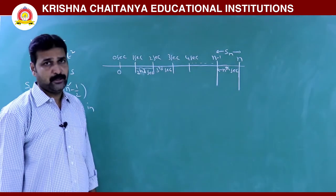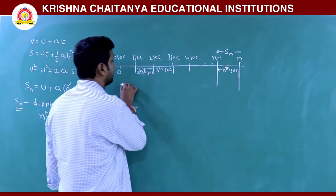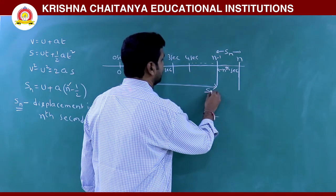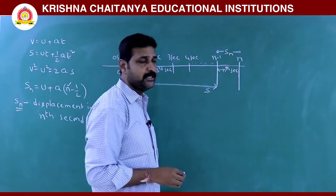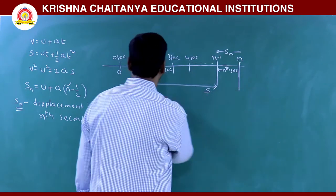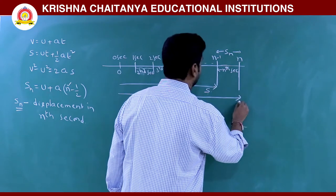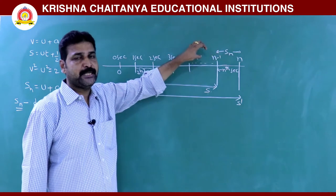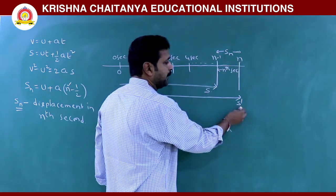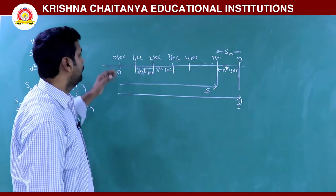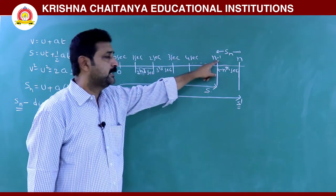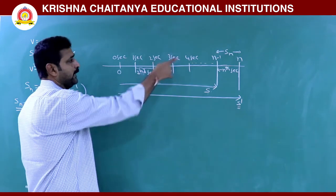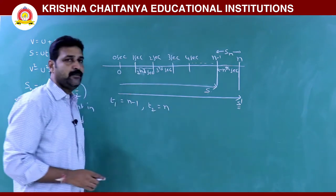Now how to find the distance traveled in the nth second? During n-1 seconds, the distance traveled is S. Up to n seconds, the distance is S'. S is the total distance traveled during n-1 seconds; S' is the total distance traveled during n seconds. The distances are taken from the starting point.